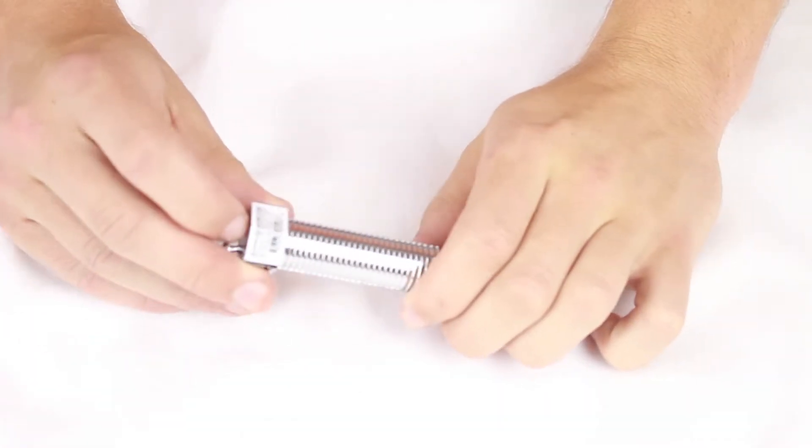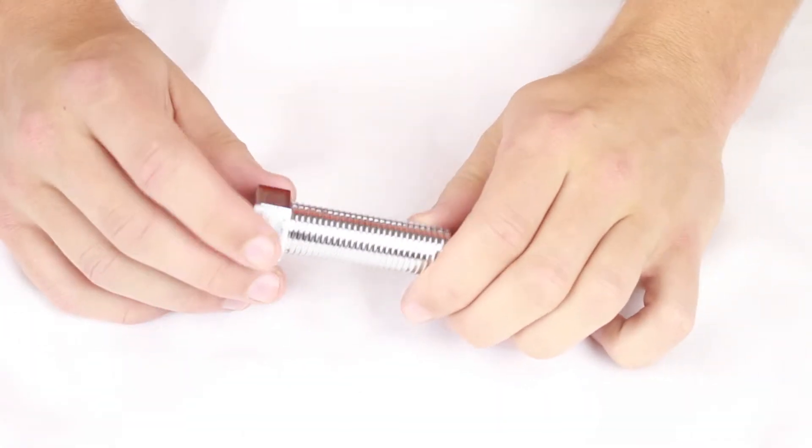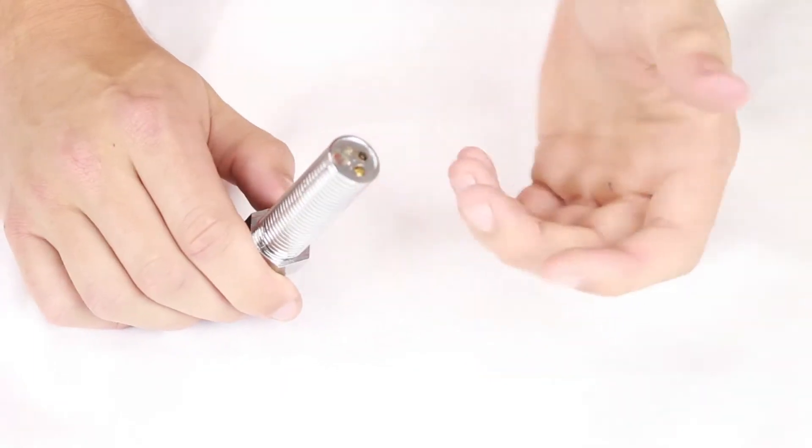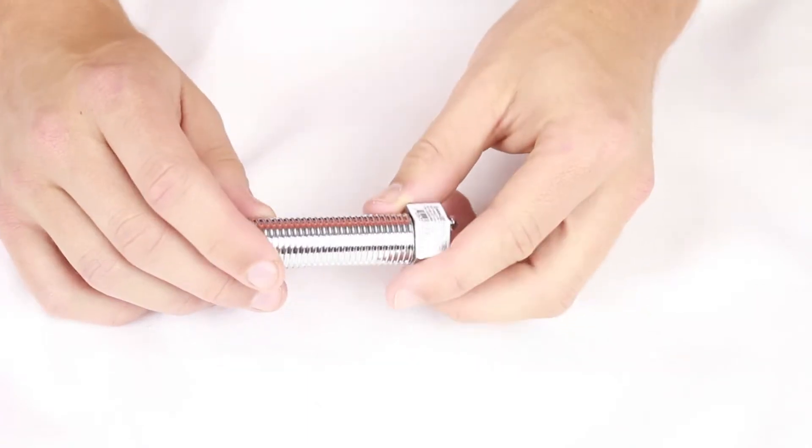This is our bolt butane soft flame lighter. You can see this one comes in silver, but it comes in a variety of different colors. It looks just like a real bolt.